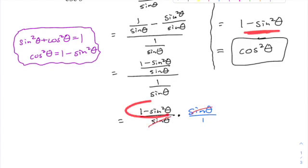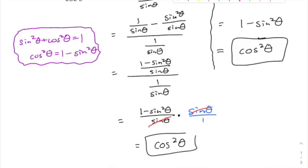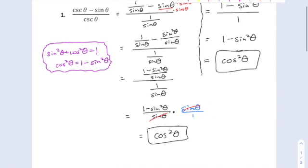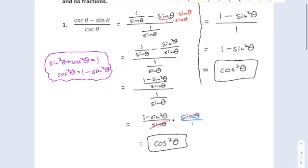I'm left with 1 minus sine squared, which is equal to cosine squared. So not too painful to do it that way either. Really about the same amount of work, maybe a step or two longer, but nothing crazy there. Some people just feel a little more slow and steady by doing that. No worries.